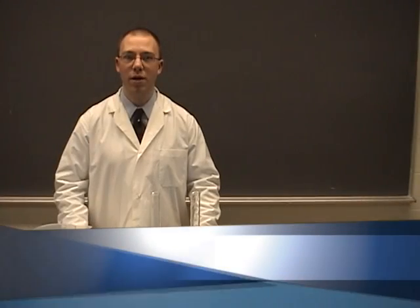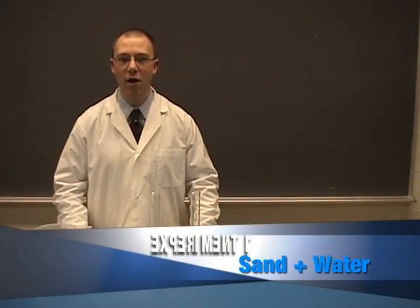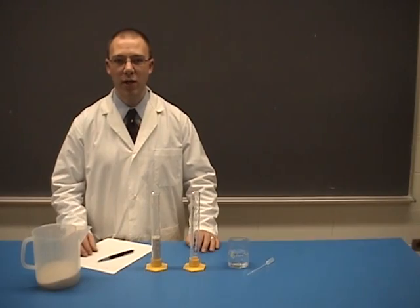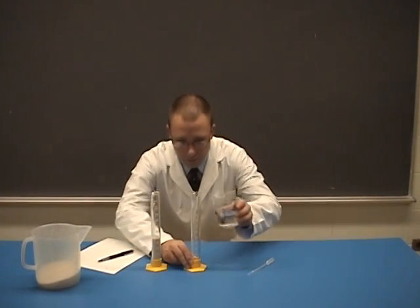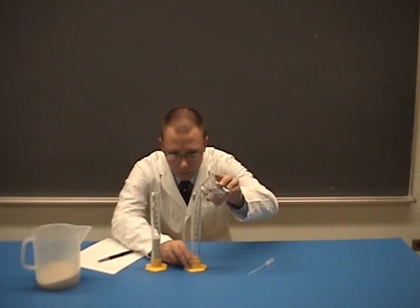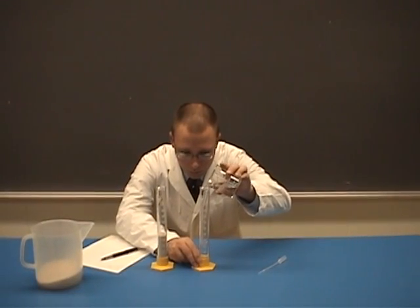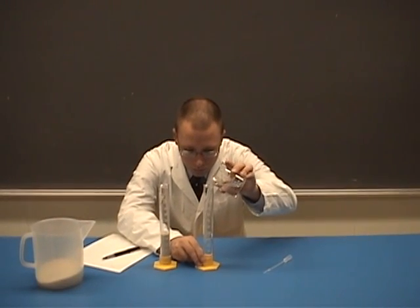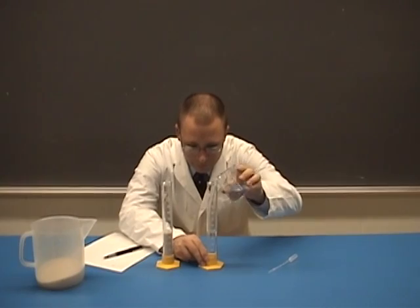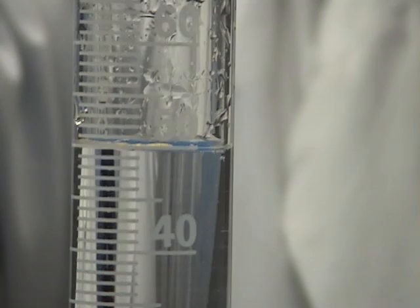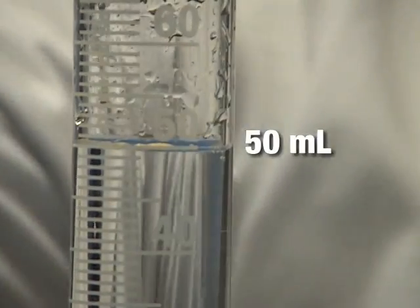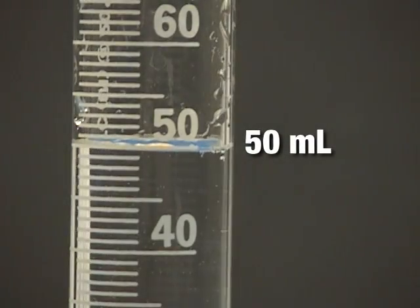Experiment 1. First, measure 50 milliliters of water using a graduated cylinder. Predict the volume of the mixture of the water and the sand.